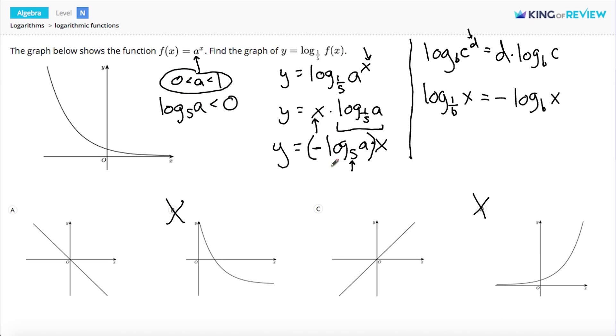So, if the log base 5 of a is negative, and we are then making that negative, two negatives in a row make a positive. Which means our slope of this line is going to be positive.